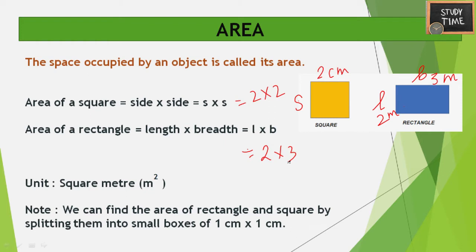The standard unit of area is square meter or meter square. Note: we can also find the area of a rectangle and square by splitting them into small boxes of 1 centimeter.